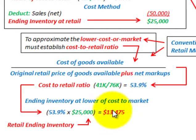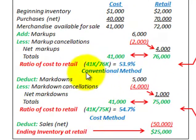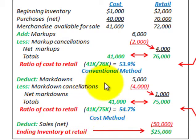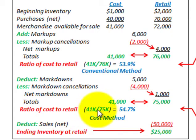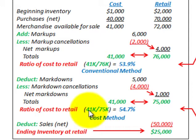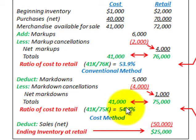Now let's look at the cost method. For the cost method, we include both markups and markdowns in our evaluation of the cost-to-retail ratio. Our cost remains $41,000, but now we divide by $75,000 - the retail amount that included both markups and markdowns. That division gives us 54.7% as our cost-to-retail ratio for the cost method.